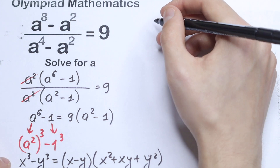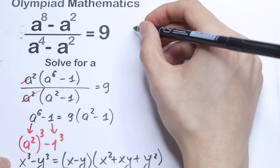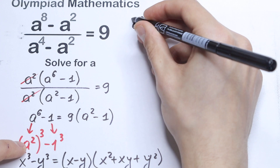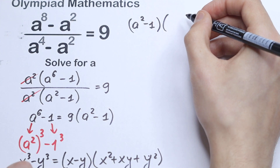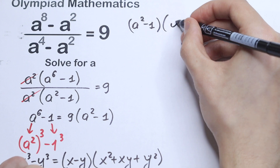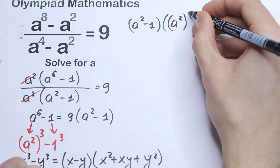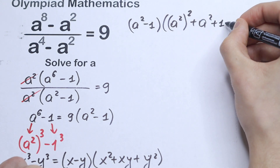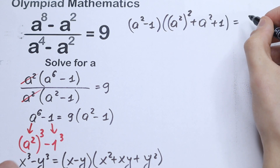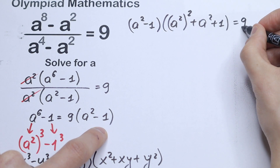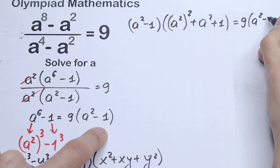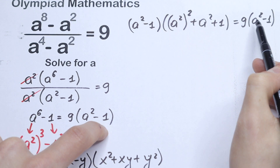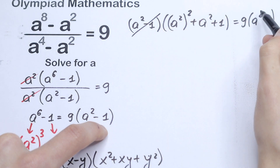So on the left side we will have a squared minus 1, times a squared to the second power plus a squared plus 1. And the right side equals 9 times a squared minus 1. Notice that a squared minus 1 appears on both sides, so of course we can cancel this.